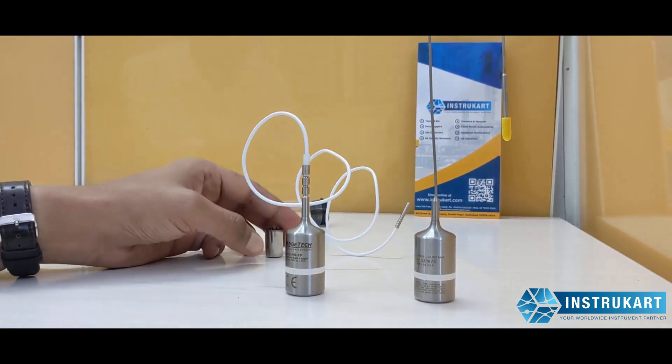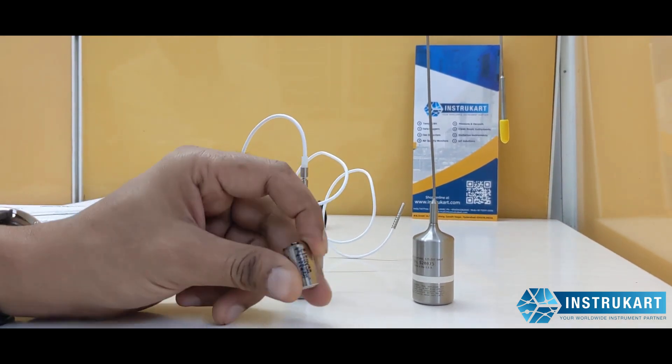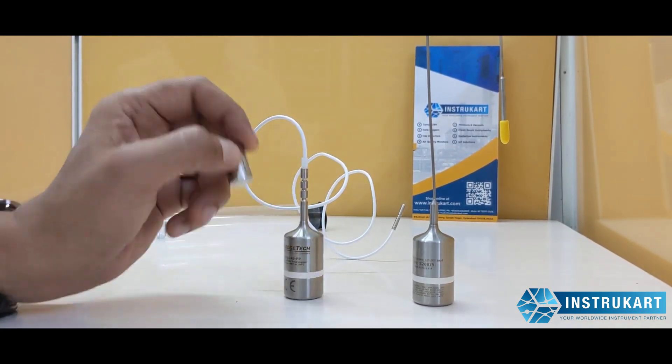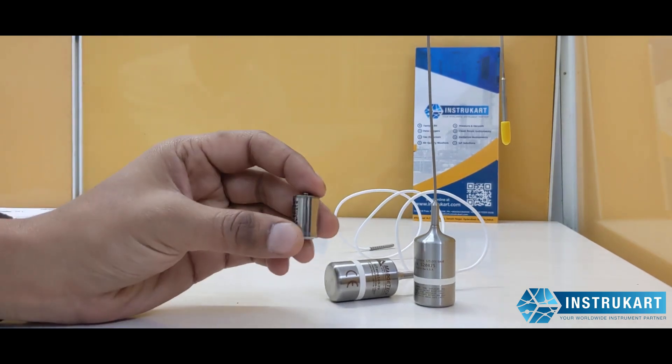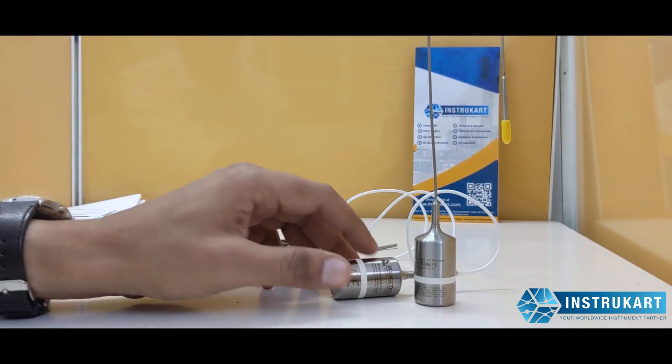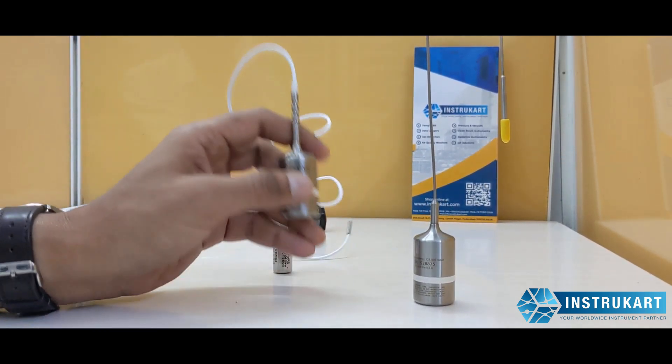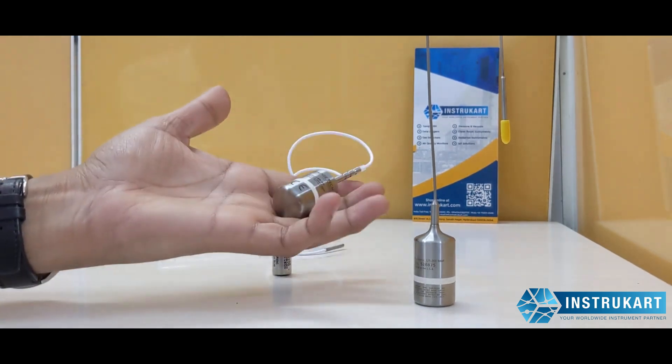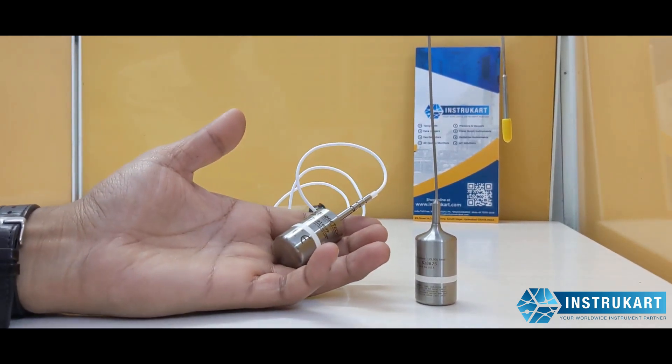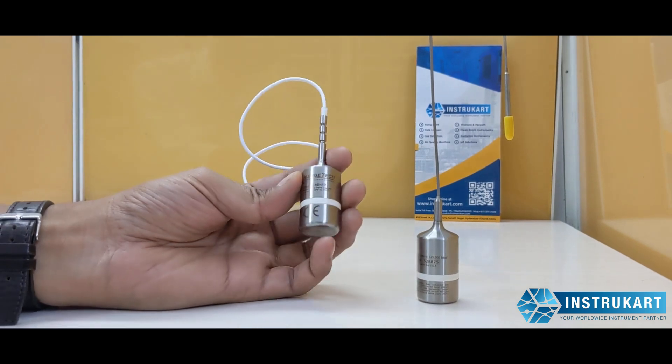The battery type is 3.6 volts lithium battery and the battery life is typically one year. The weight for these loggers is around 120 grams and it has CE approvals.